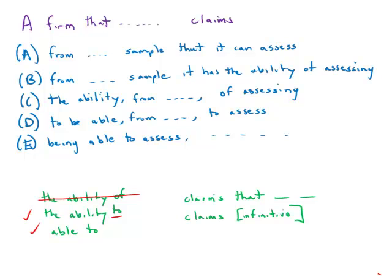So these are correct. Ability of, ability of—those are incorrect.